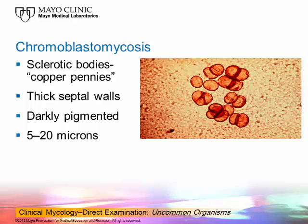This next slide shows you an example of these copper pennies or muriform bodies. They have thick septal walls — you can see the cross walls are very thick. They're darkly pigmented, particularly in the center, and they're 5 to 20 microns, so you can see them macroscopically. These are found in cases of chromoblastomycosis.